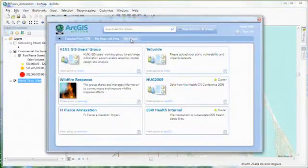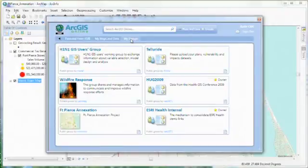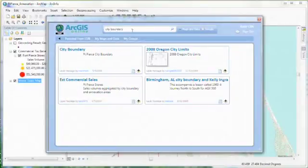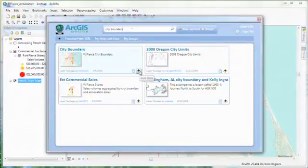Here, I can see details of all the groups I belong to. And since I've signed in, all of this additional content is now searchable. In this case, I'm looking for the Fort Pierce city boundary. Now that I've found the layer I need, I can bring it into my project and add additional insights.